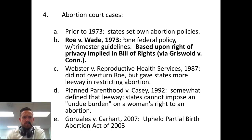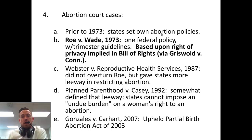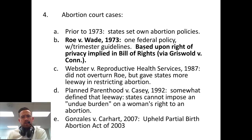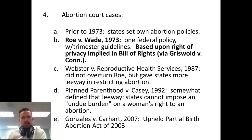Let's look at abortion court cases. Prior to 1973, states had their own laws about abortion — California might allow it, Montana might ban it. But in Roe v. Wade in 1973, it said that your right to privacy as a woman, implied in the Bill of Rights, means yes, you can get an abortion. States could put some restrictions on it, but states had to allow it also.